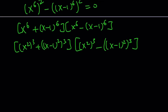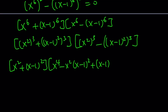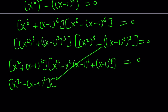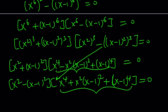For the sum of the two cubes, you use the formula for a³ + b³. You write this as (a + b)(a² − ab + b²), giving (x² + (x−1)²)(x⁴ − x²(x−1)² + (x−1)⁴) = 0. For the difference of two cubes, the other factor is (x² − (x−1)²)(x⁴ + x²(x−1)² + (x−1)⁴) = 0. From these you get quartics, which are possible to solve.